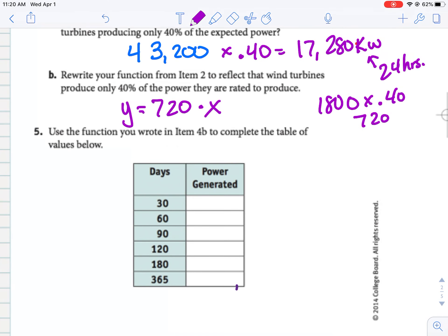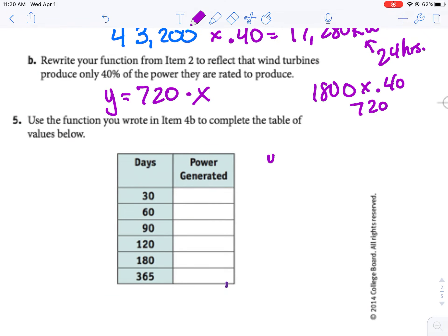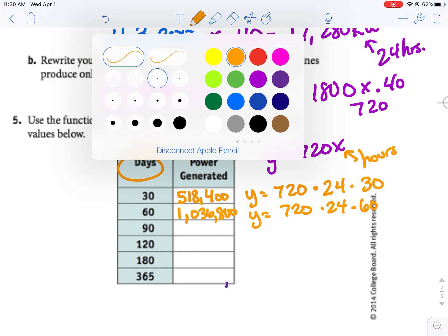So we're going to use that equation to figure out how much energy or power would be created in 30 days, 60 days, 90 days, et cetera. The one thing we've got to be careful is that 720x, remember, x represents the number of hours. So we've got to be careful because now this is talking about how many days. So we know that for 30 days, we would have to take 720, and we know there's 24 hours in a day, but then we'd also have to multiply by 30 because there's 30 days. That number is 518,400. So these numbers are going to be pretty big.